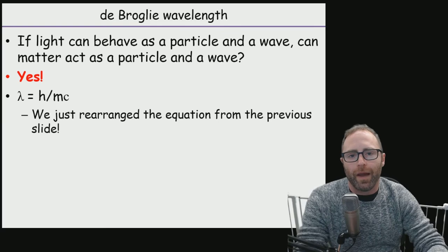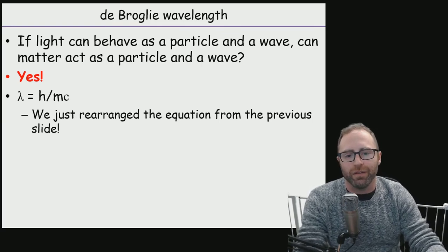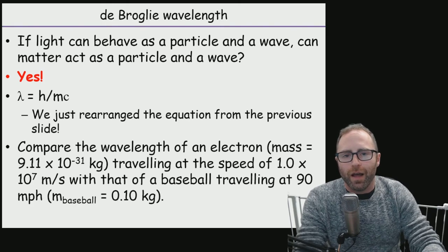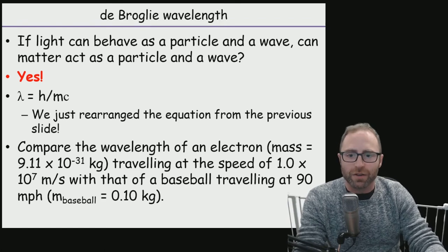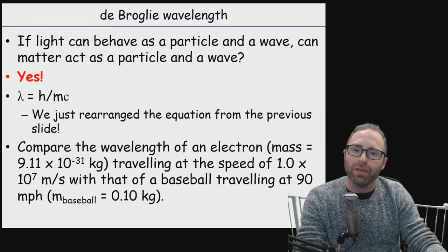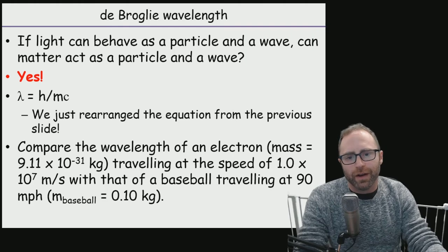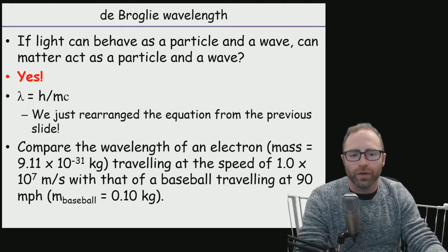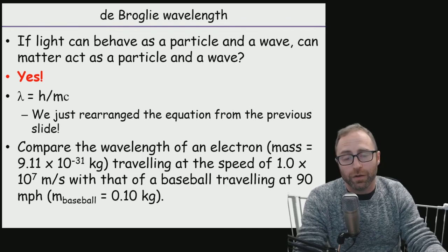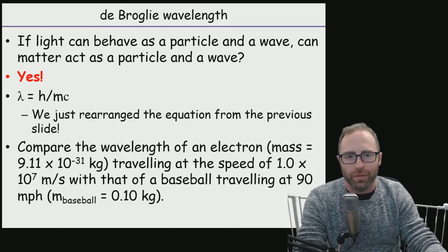We're going to have an equation that we just rearranged from the previous slide. And so now we can say for anything that we're measuring, if it's a particle, it's going to have a wavelength. So the example that we've got written out here are two different things that you may or may not be familiar with, an electron, which you should be familiar with in Chemistry 150, and a baseball, which you may or may not be.